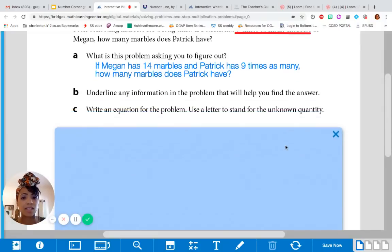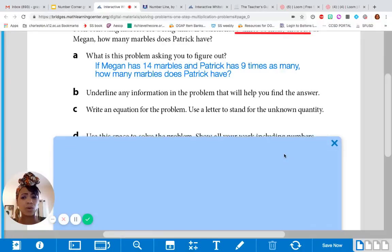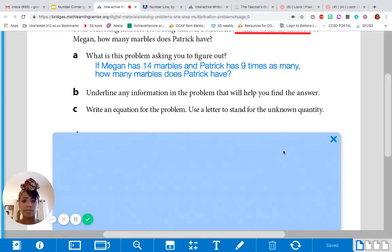So, let's look at the next part. Part C. It says, write an equation for the problem. Use a letter to stand for the unknown quantity. Hmm, what is unknown quantity? Right, an unknown is something you don't know. Okay, what about quantity? Good, quantity is an amount. So, let's write an equation.